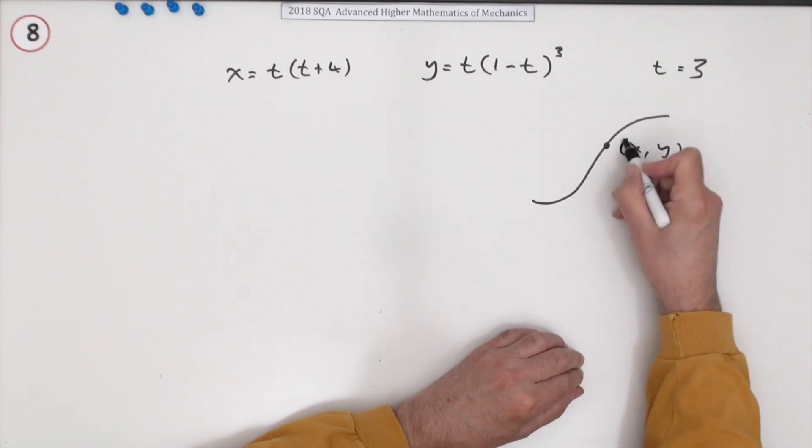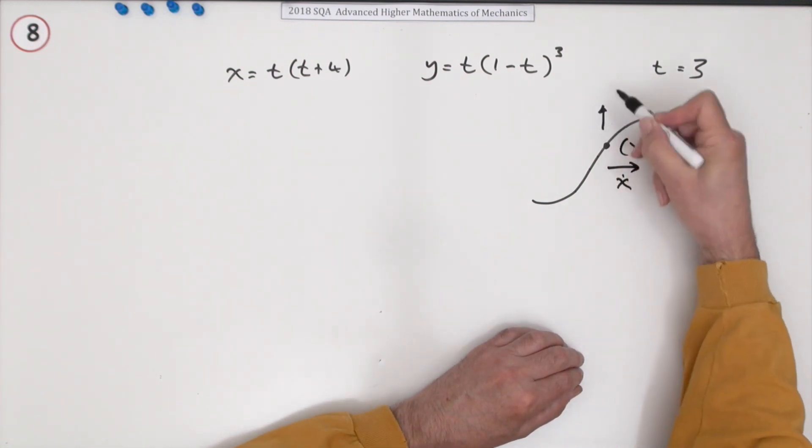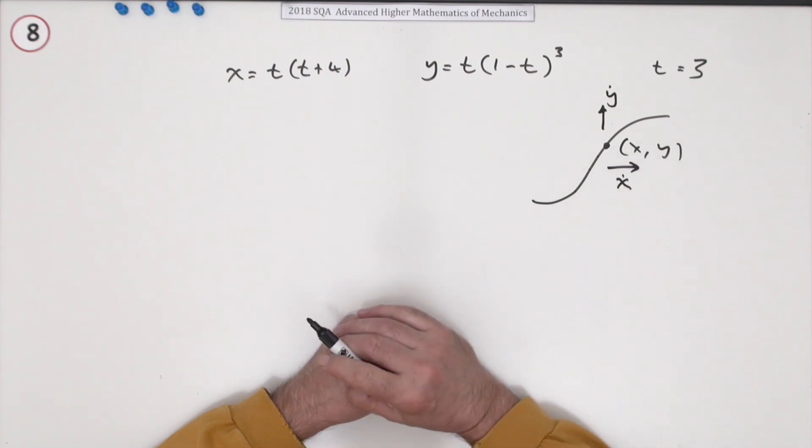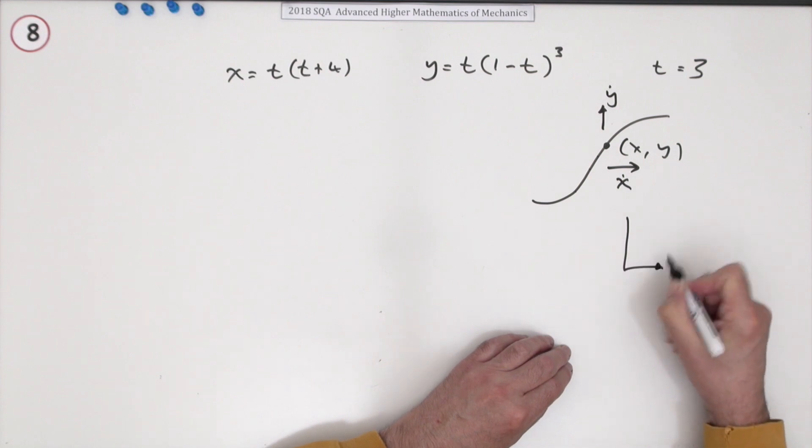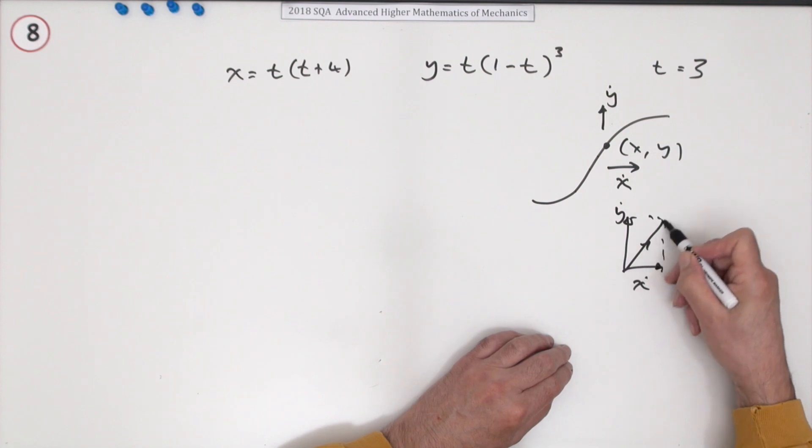So what you want then is what's the x component of the velocity at this point and what's the y component at that point. By differentiating those and then combining them in a vector addition, that's x dot, that's y dot. So the resultant speed or the resultant velocity would be this vector.